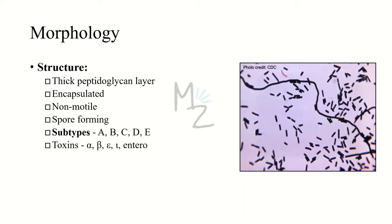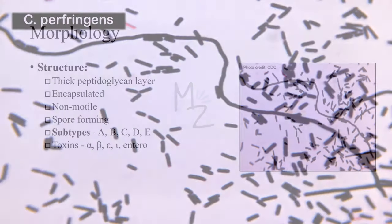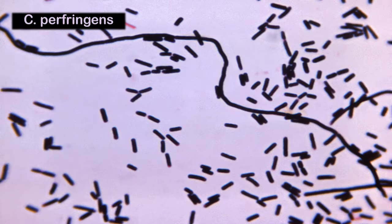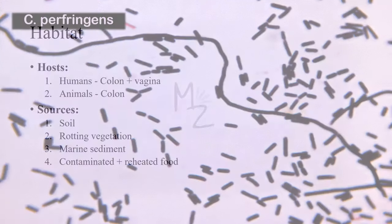This bacterium is also responsible for releasing certain toxins — alpha, beta, epsilon, iota, and entero — which we'll touch upon in the pathogenesis section. As shown in this picture, you can see that this bacterium is rod-shaped. As it is pleomorphic, it has got curved or truncated ends. It might be straight or slightly curved.